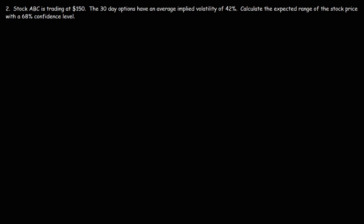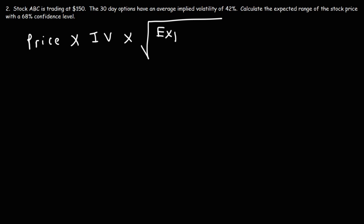Let's work on another example problem. Stock ABC is trading at $150. The 30-day options have an average implied volatility of 42%. Calculate the expected range of the stock price with a 68% confidence level. Using the same formula — stock price × implied volatility × √(days to expiration / 365) — this will give us the value of one standard deviation.